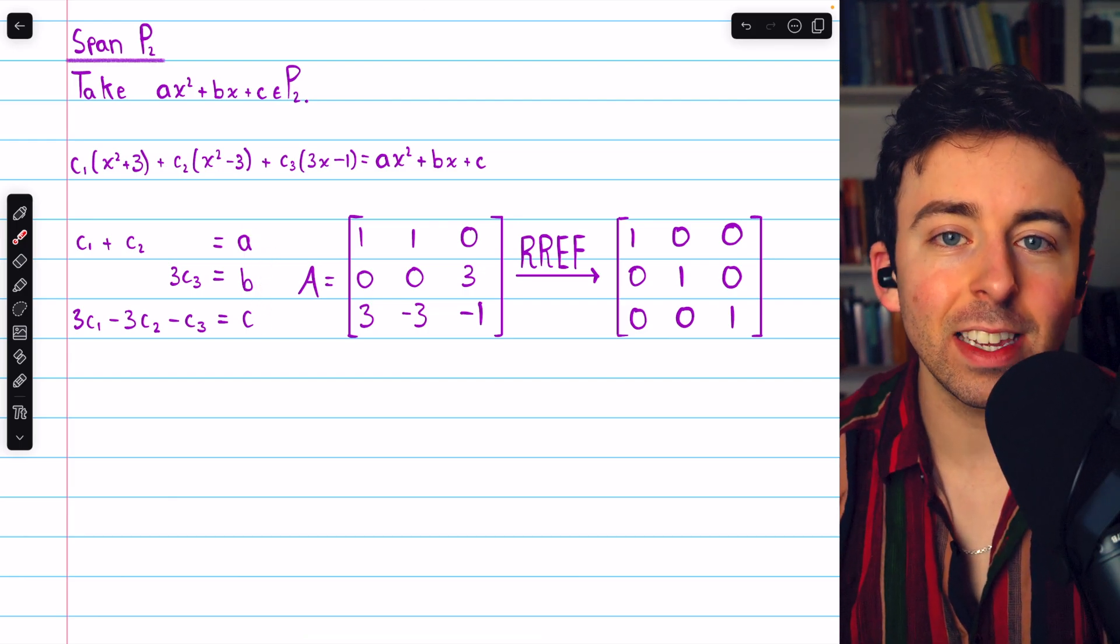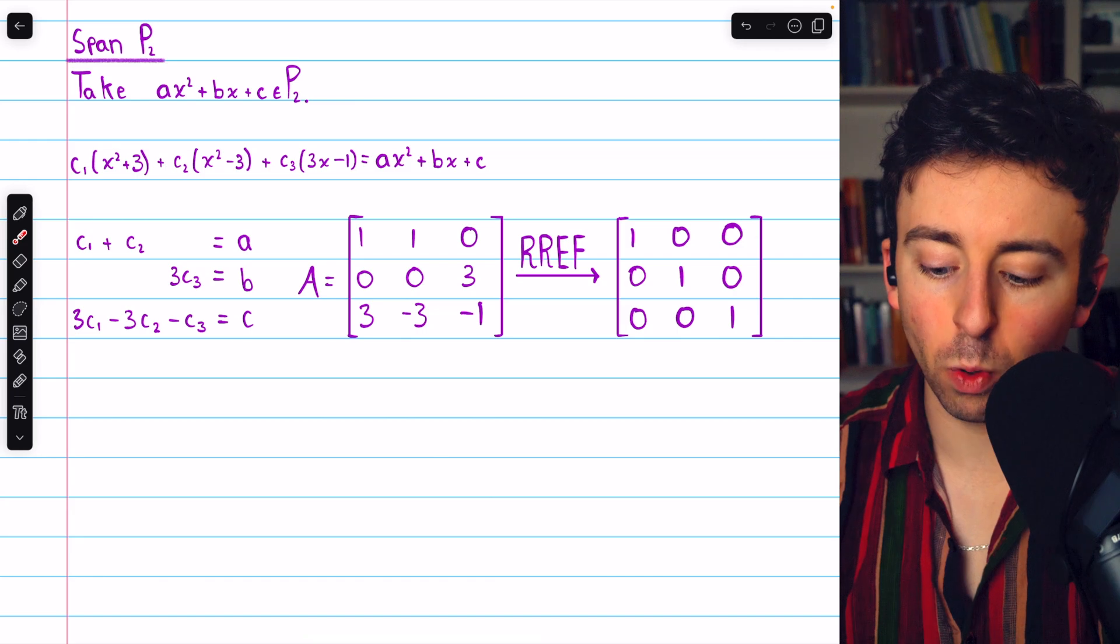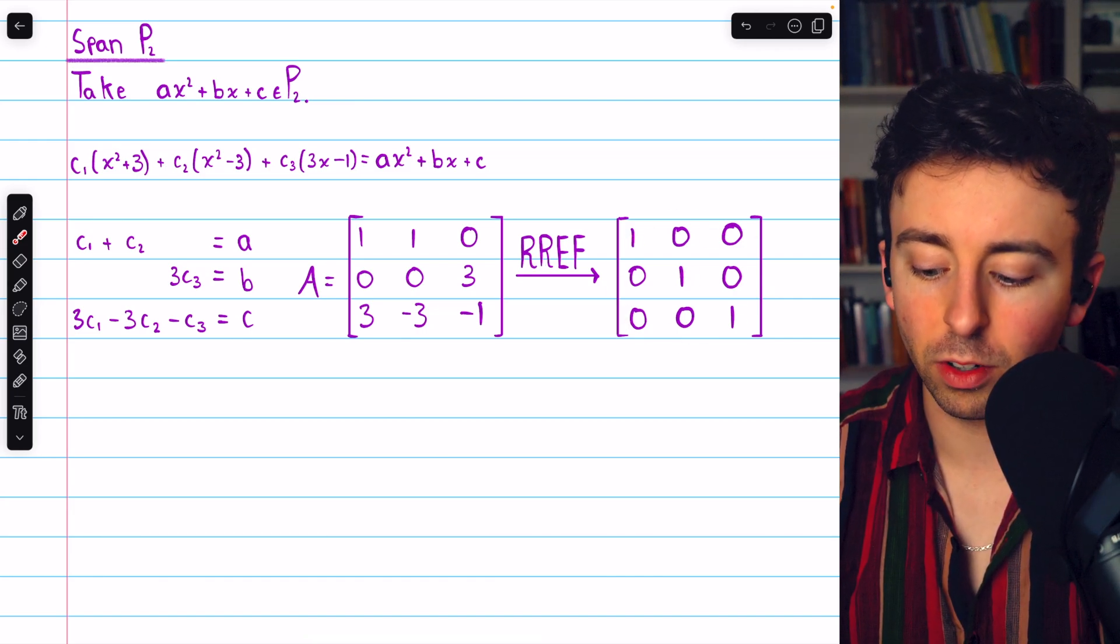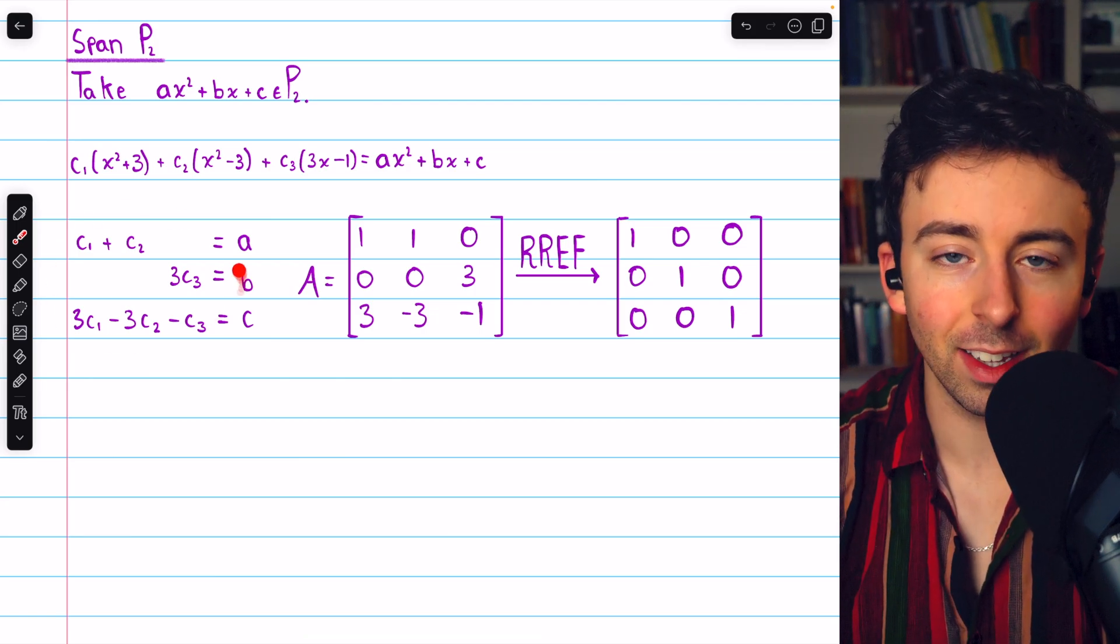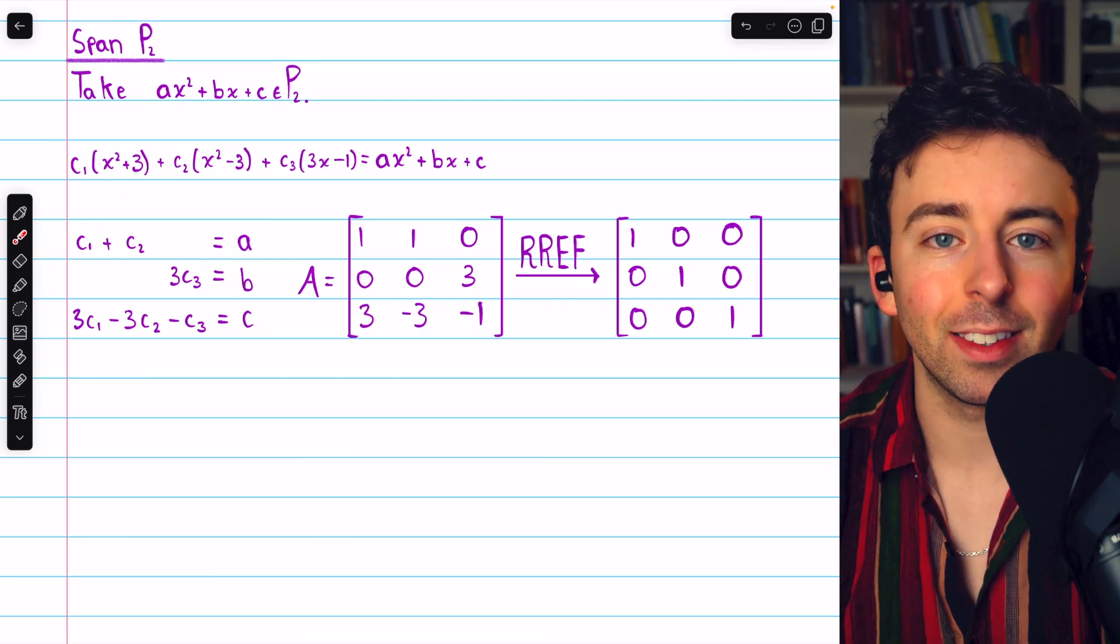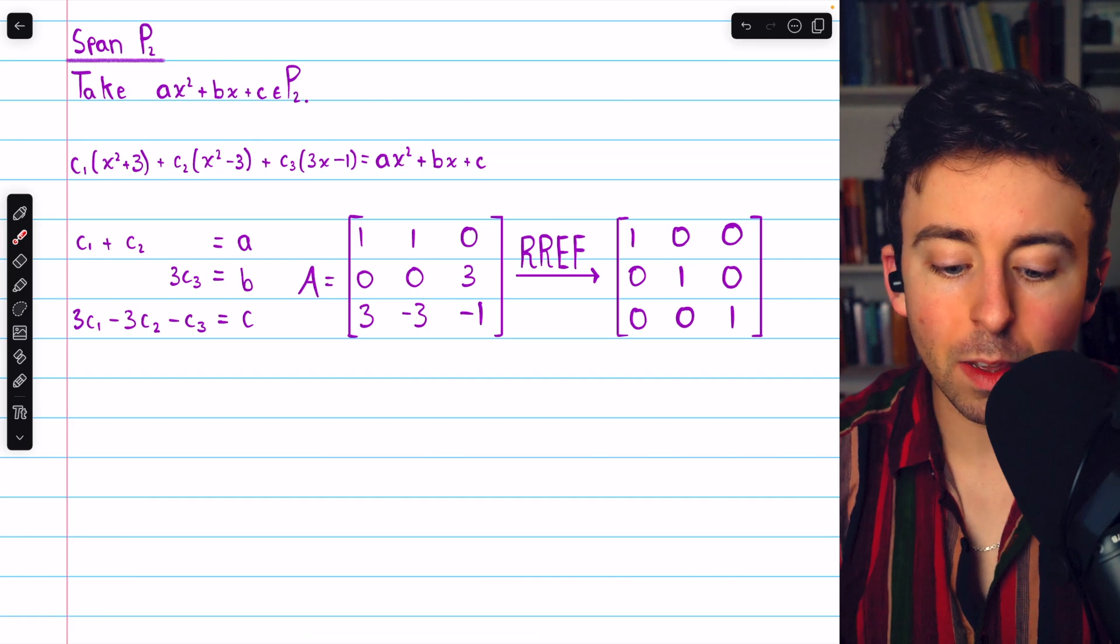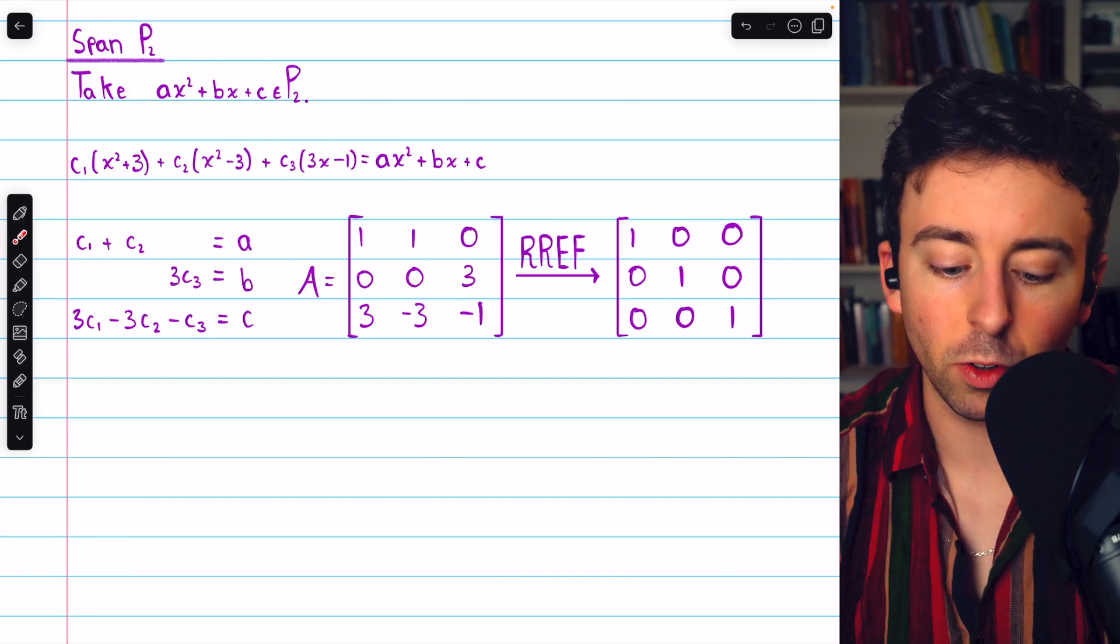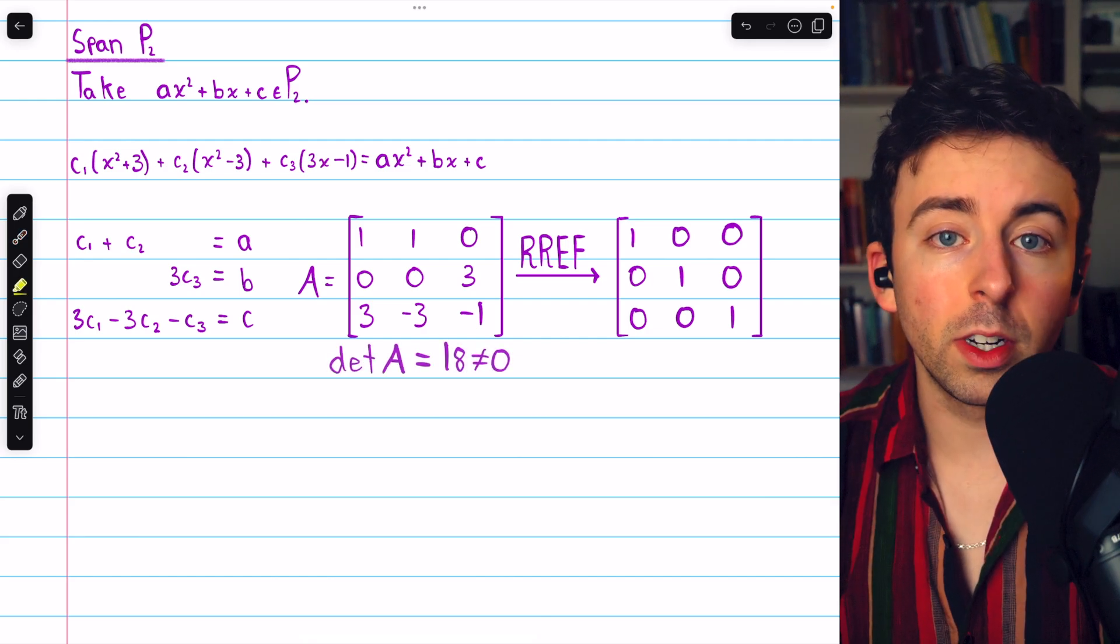no matter what A, B, and C are, we could perform Gauss-Jordan elimination to arrive at a unique solution for C1, C2, and C3. The system is consistent no matter what A, B, and C are. Hence, any polynomial from this space could be expressed as a linear combination of our three polynomials. Alternatively,